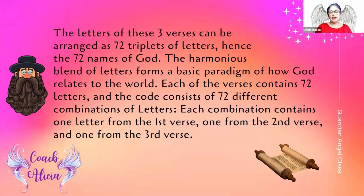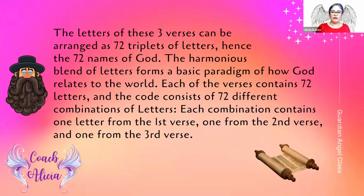Each of the verses contains 72 letters, and the code consists of 72 different combinations of letters. Each combination contains one letter from the first verse, one letter from the second verse, and one letter from the third verse. So the first three letters are the first name of God, the second set of letters is the second name of God, all the way down to 72.